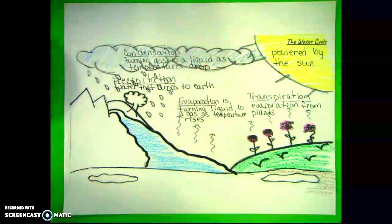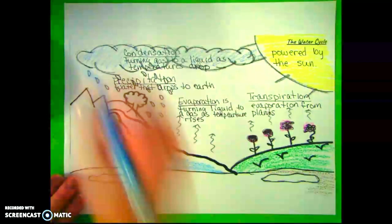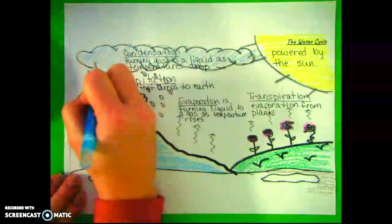Precipitation can come down as rain, sleet, snow, and hail.